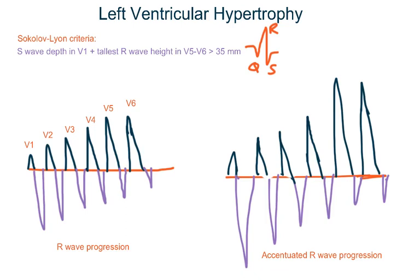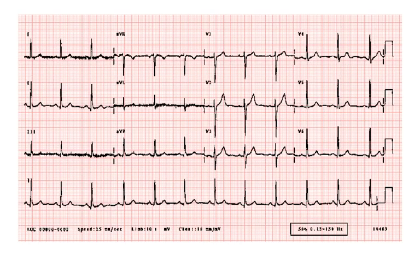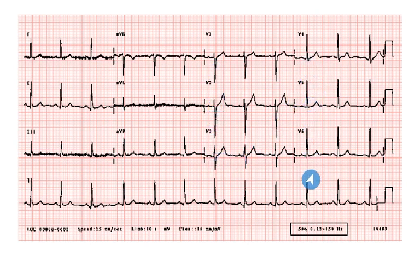So this is what Sokolow-Lyon criteria is: the S wave is very deep in V1 and the R waves are very tall in V5 and V6. Now this is a normal ECG — look at the R wave from V1. It's small here, then it keeps increasing in size, and in V4, V5, V6 it becomes tall.